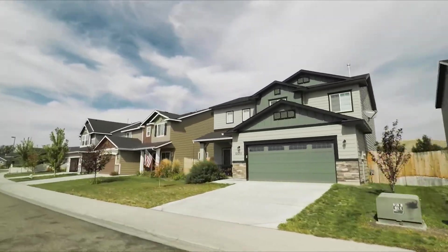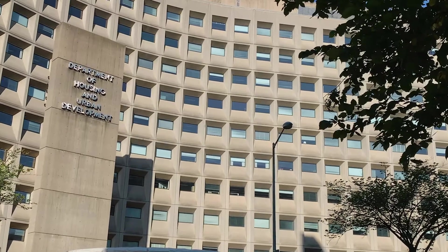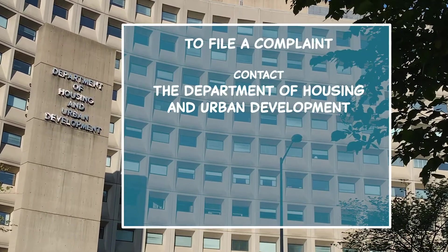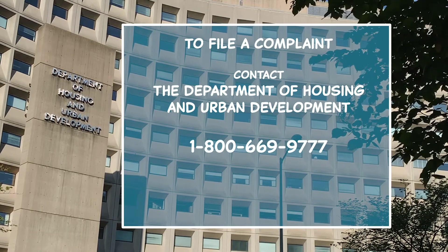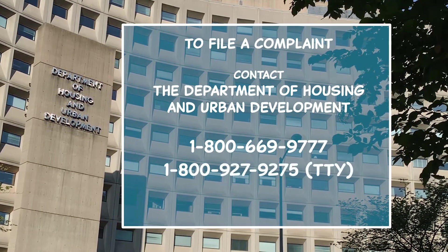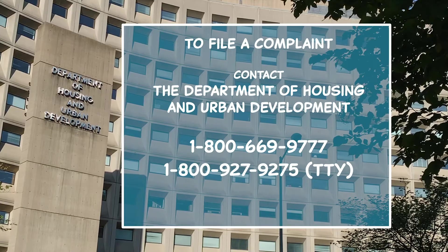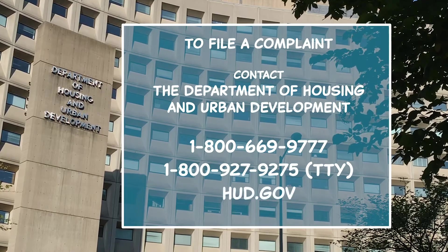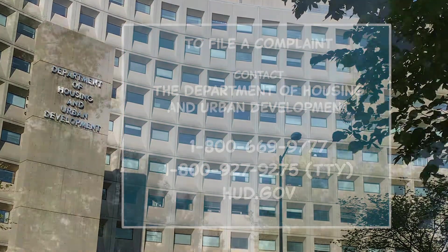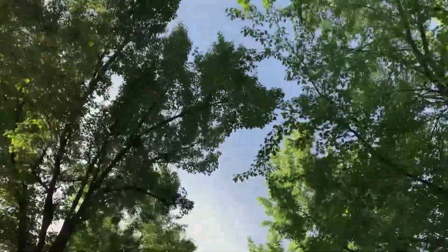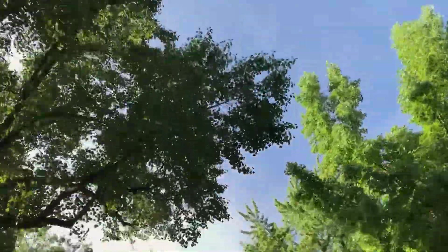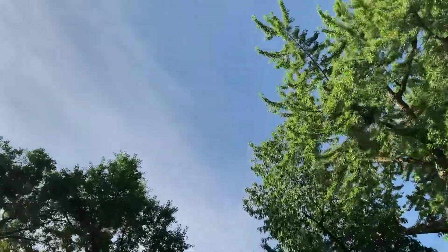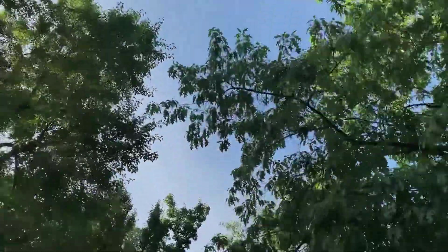If you believe you have experienced housing discrimination, you can file a complaint with the Department of Housing and Urban Development by calling 1-800-669-9777 or 1-800-927-9275 for TTY, or by visiting HUD.gov. Complaints can be filed in any language. Because there are time limits from when an incident happens to when complaints can be filed, you should submit yours as soon as possible.